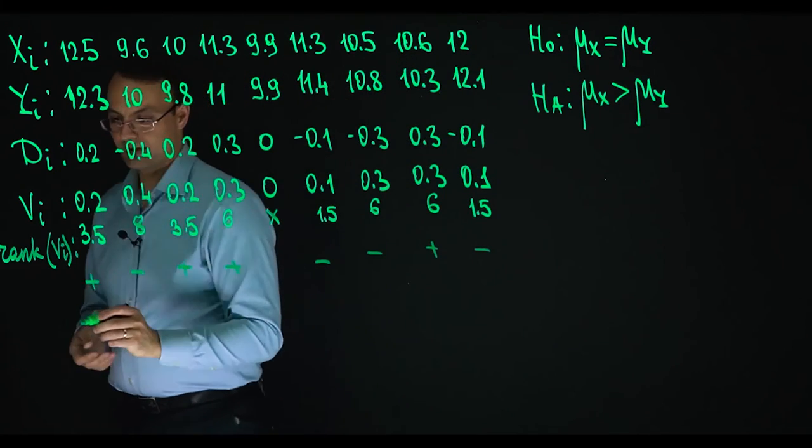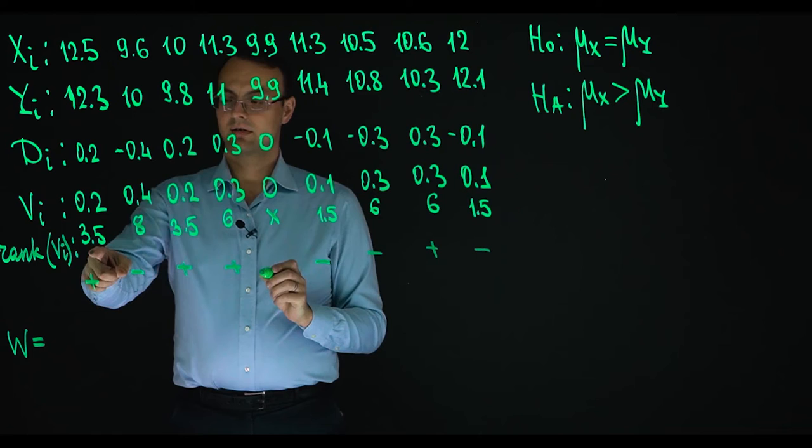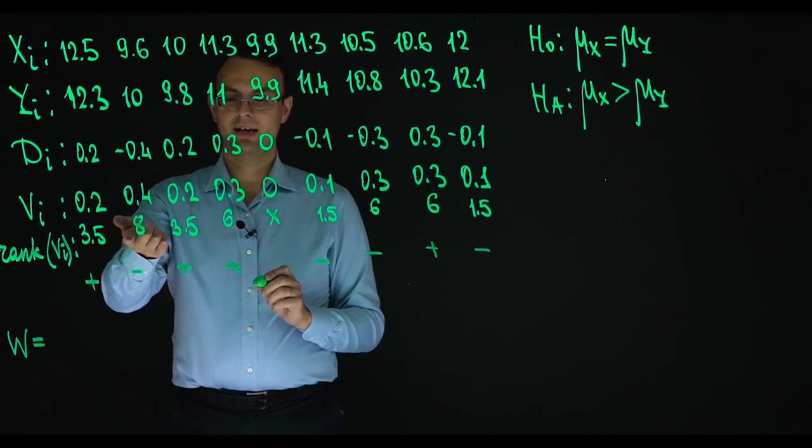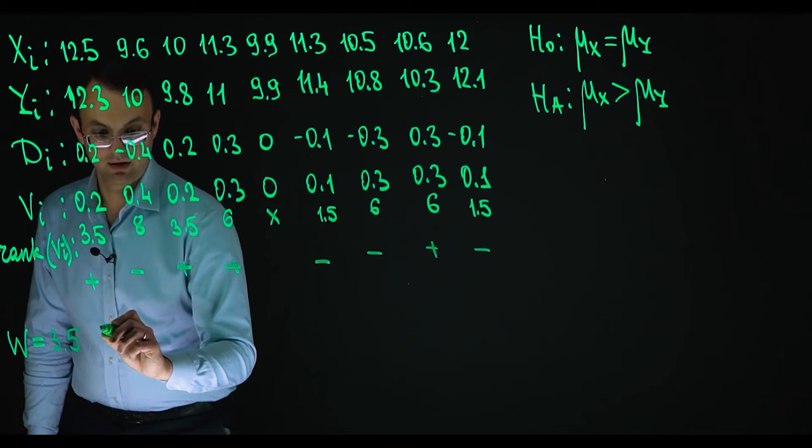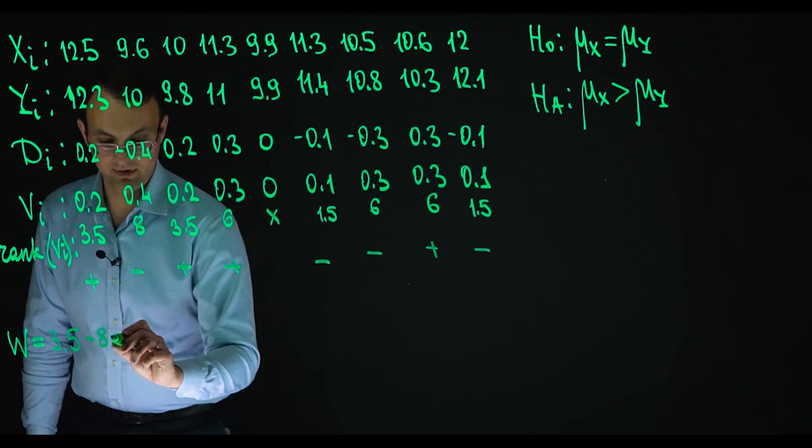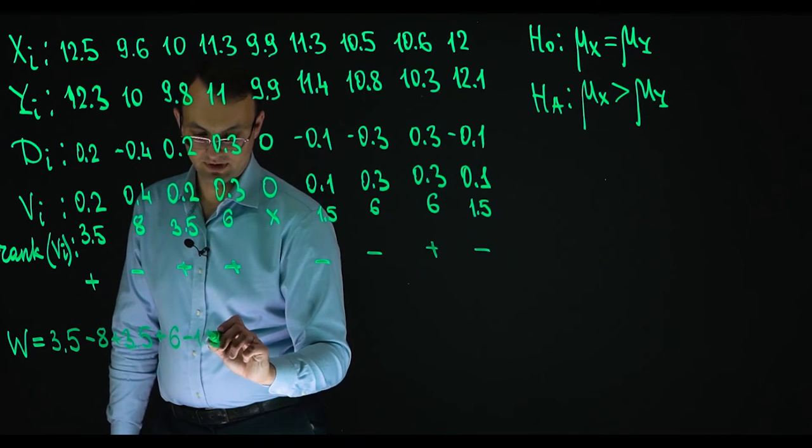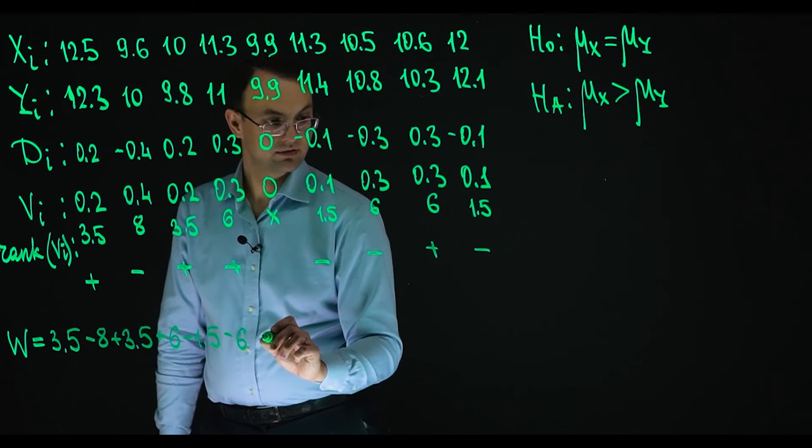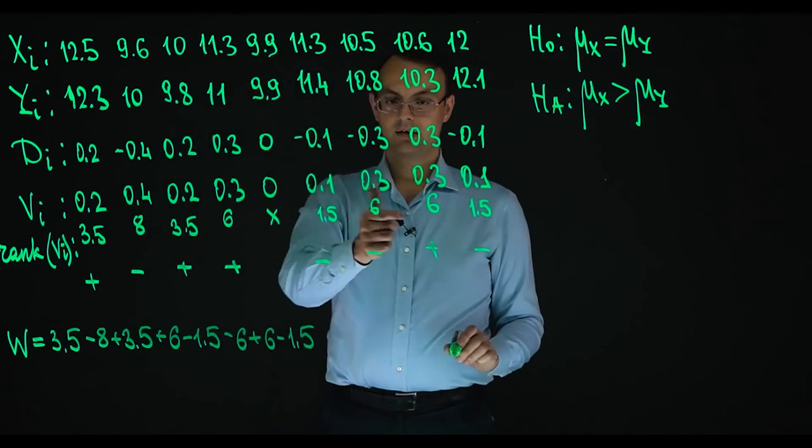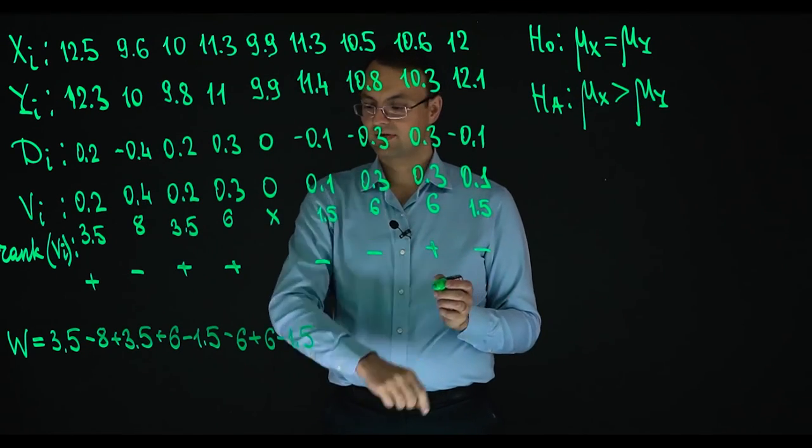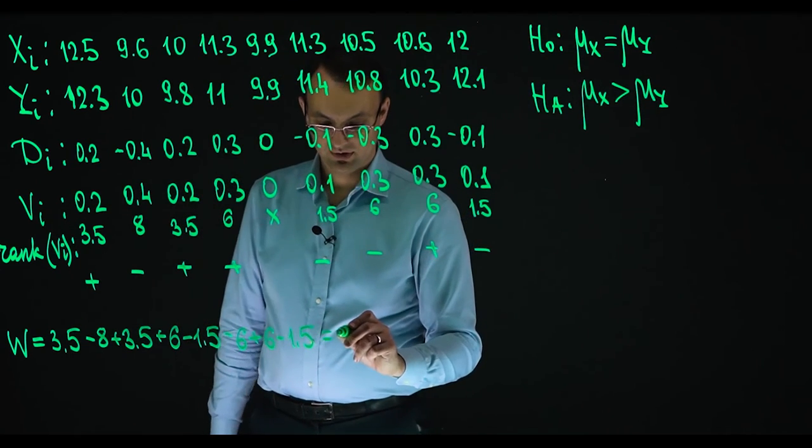And then we are to find W. W is when we multiply rank by the sign and add them. So we are adding ranks multiplied by the respective signs. So this is 3.5 minus 8 plus 3.5 plus 6 minus 1.5 minus 6 plus 6 minus 1.5. So each rank takes the respective sign. And so if we add all these numbers, we'll get that W is minus 5.